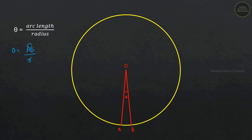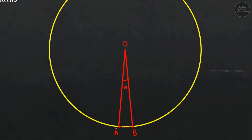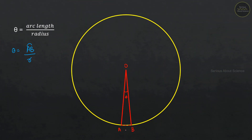This is the approximation. When A and B are very close and joined, we get an arc. We can assume that arc as a straight line. That is, when theta is small, this arc can be approximated to be equal to the chord length AB.